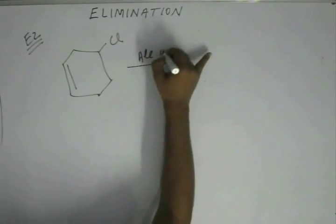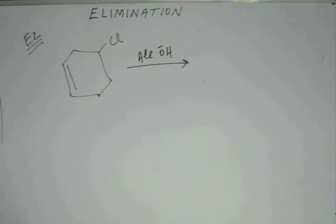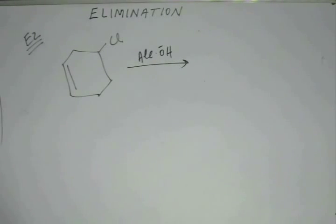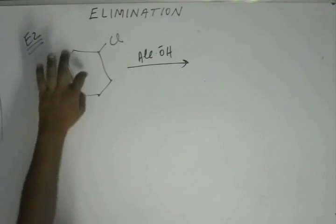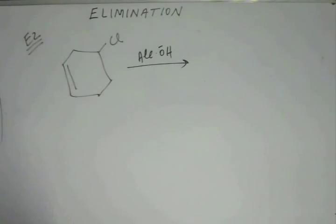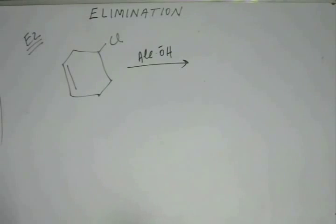Let's solve a problem. Suppose we have a substrate with alcoholic OH⁻ added to it. Alcoholic OH⁻ is a base — aqueous OH⁻ would be a nucleophile, but alcoholic OH⁻ is a base, so elimination takes place. Elimination occurs from the beta position of the leaving group; here the leaving group is chlorine. There are two beta positions, so there are two possible products, and we must judge which is the major product.